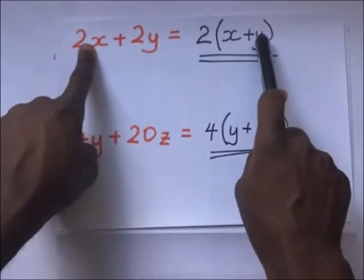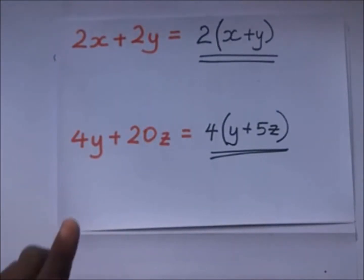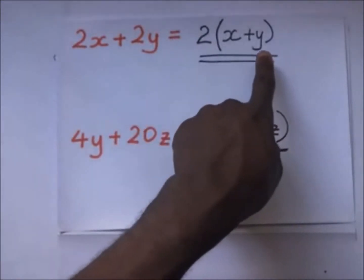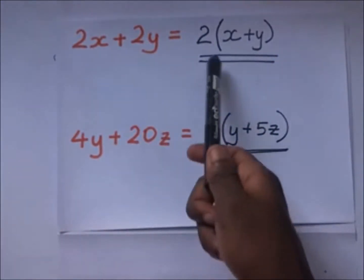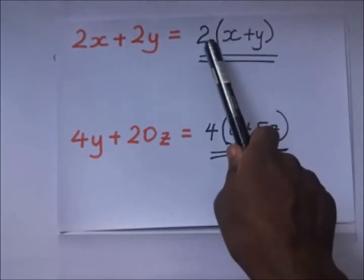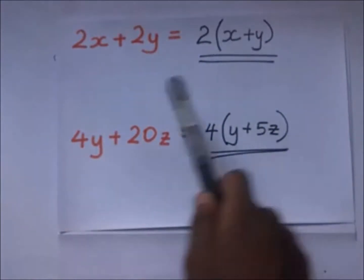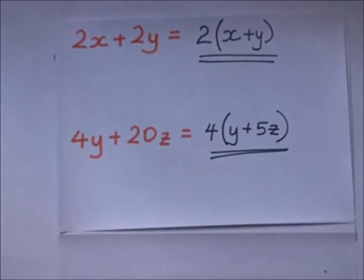So you realize that what we have been doing in our previous video — opening the brackets — involved multiplying the factor outside the brackets by the terms inside. Now we are doing the reverse: when we are factorizing, we are doing the reverse of opening brackets.